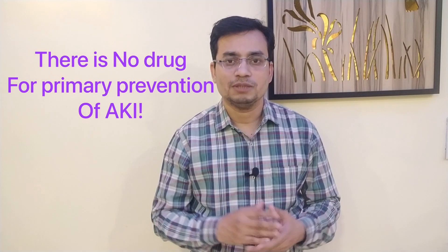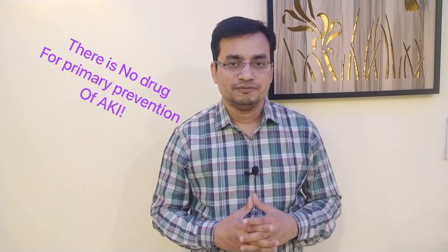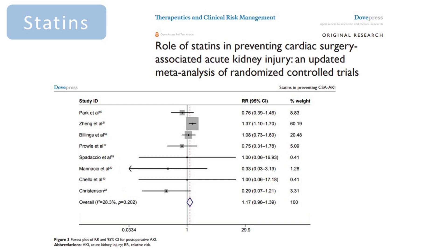Are there any specific drugs that provide protection to kidneys from AKI? Unfortunately, no. There is no drug for the primary prevention of AKI. Few drugs have been tried, like statins for cardiac surgery-related AKI, but none could show any significant renal benefits. Therefore, it is not recommended to initiate statin therapy for prevention of AKI following cardiac surgery. We are left with only secondary prevention, which basically consists of avoidance of nephrotoxic agents.